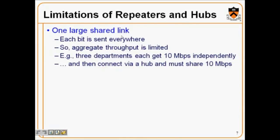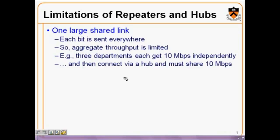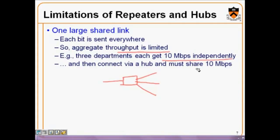Moving forward, what are the limitations of repeaters and hubs? They create one large shared link — each bit is sent everywhere. Whatever comes into a hub goes out all ports. This limits aggregate throughput. For example, three departments each with 10 Mbps independently connected via a hub must all share that 10 Mbps.